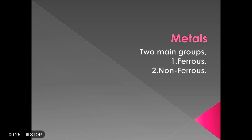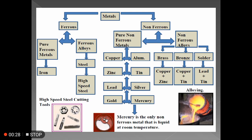Metals get classified into ferrous and non-ferrous. Both ferrous and non-ferrous get further classified into metals and alloys. An alloy is nothing but the combination of two or more metals. We need alloying because we need to enhance the properties of the base material.